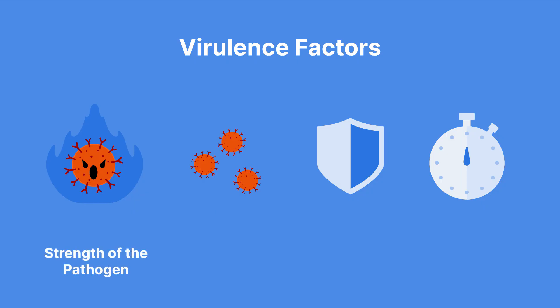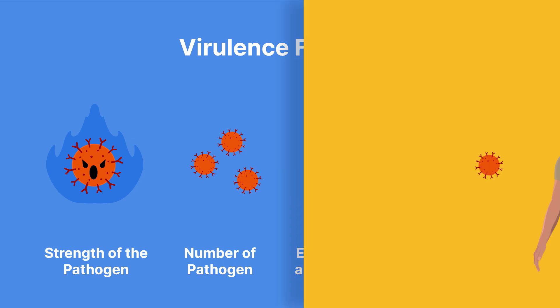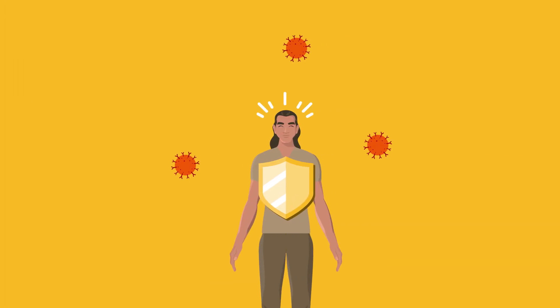The strength of the pathogen, the number of pathogens present, the effectiveness of a host's immune system, and the length of exposure to the pathogen all play a role in a pathogen's virulence, or ability to cause damage to a host. For example, if a person with a strong immune system is exposed to a small amount of influenza A for a short period of time, it is unlikely that they will develop symptoms.